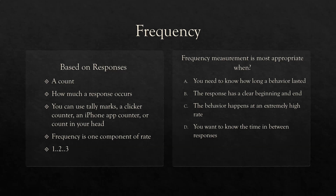C — the behavior happens at an extremely high rate. When a behavior happens at an extremely high rate and there's a lot going on, you're liable to miss some instances of your frequency count, so you may want to use a different type of measurement. D — you want to know the time in between responses, which is inter-response time. So when using frequency, we're looking for a response that has a clear beginning and an end.